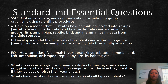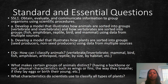Let's start out by going over our standard and essential questions. Our standard is 5L1, which is obtain, evaluate, and communicate information to group organisms using scientific procedures. Part A says: develop a model that illustrates how animals are sorted into groups — vertebrate and invertebrate — and how vertebrates are sorted into groups: fish, amphibian, reptile, bird, and mammal, using data from multiple sources.